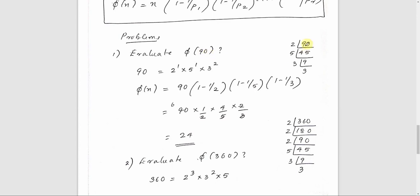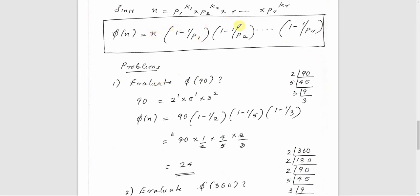Let's evaluate phi of 90. The prime factorization of 90: divide by 2 to get 45, divide by 5 to get 9, divide by 3 to get 3. So 90 equals 2 raised to 1 times 5 raised to 1 times 3 raised to 2, which is p1 raised to k1 times p2 raised to k2 times p3 raised to k3. Applying the formula: phi of 90 equals 90 times (1 minus 1 by 2) times (1 minus 1 by 5) times (1 minus 1 by 3), which equals 90 times 1/2 times 4/5 times 2/3, giving the answer of 24.